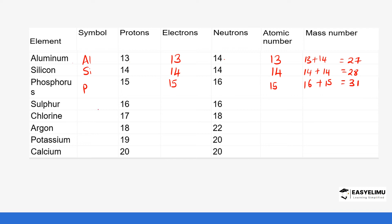Sulfur has the symbol S. It has 16 protons, so it also has 16 electrons. The atomic number is 16. Looking at the mass number, we add the number of neutrons, which is 16, to the number of protons, which is 16, giving us 32.